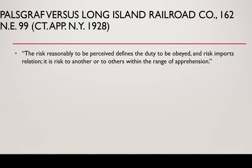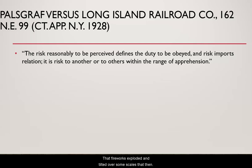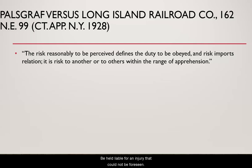The scale fell because of an explosion of fireworks as someone was rushing to get on the train. The question is: was the railroad company liable to a passenger who was injured when something so unforeseen happened — that fireworks exploded and tilted over some scales that then fell on poor Mrs. Palsgraf? What the court was grappling with is whether the railroad could be held liable for an injury that could not be foreseen.